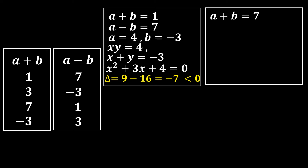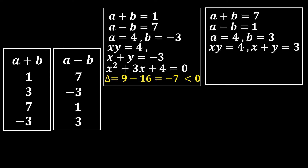System 2: a + b = 7, a - b = 1. Adding gives 2a = 8, so a = 4, b = 3. Thus xy = 4 and x + y = 3. The quadratic is x² - 3x + 4 = 0. The discriminant is again negative, so complex solutions are generated — this system is also rejected.